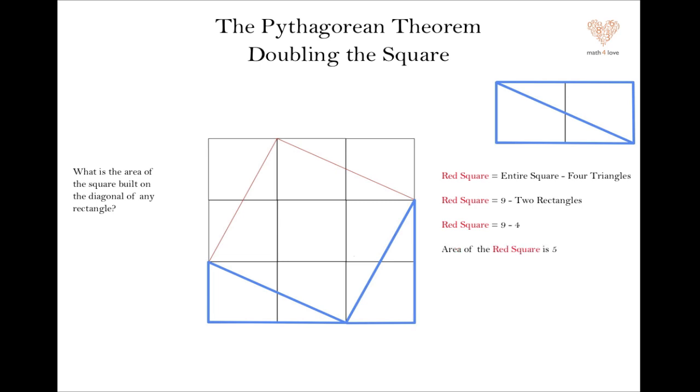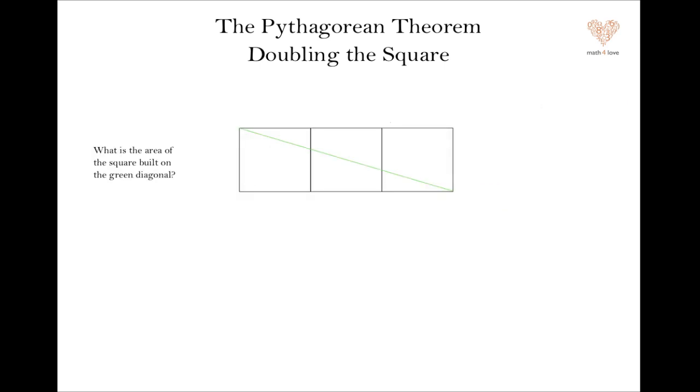This is pretty nice, and it actually suggests that we can use this kind of method to find the area of the square built on the diagonal of any rectangle. So I'm going to end this video in a minute. But I want to leave you with some problems to try out before we tackle the Pythagorean theorem in its refined, more modern form.